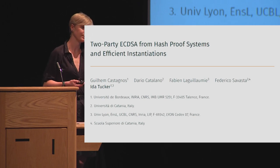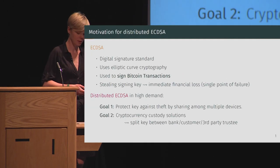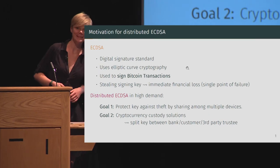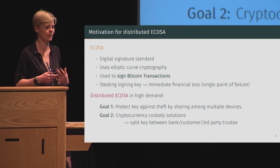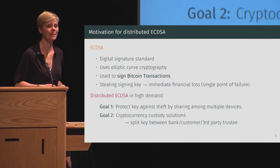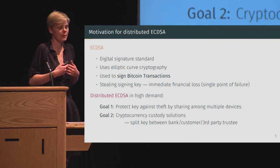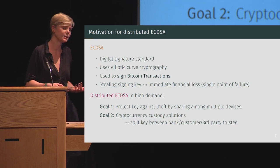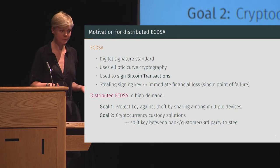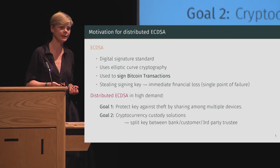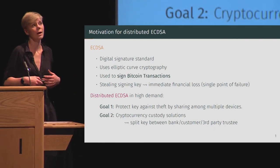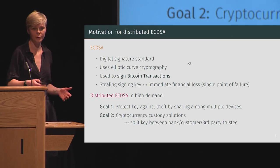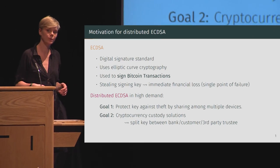Before I go into the details, let me give you some intuition for why this work is of practical interest. eCDSA stands for Elliptic Curve Digital Signature Algorithm — a standardized digital signature algorithm relying on elliptic curve cryptography. It's the signature used in Bitcoin to validate transactions. In particular, if someone steals your secret signing key, they can spend your Bitcoins, creating a single point of failure we'd like to avoid. This is where a distributed version of eCDSA saves the day: by sharing the key among multiple devices, we reduce the risk of key theft and enable cryptocurrency custody solutions where multiple parties must cooperate to perform sensitive operations.